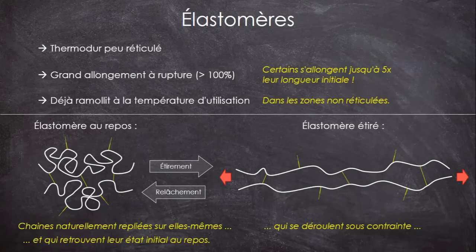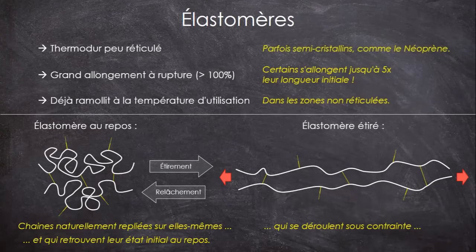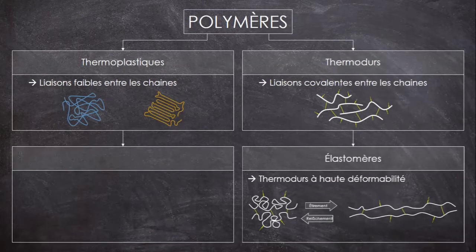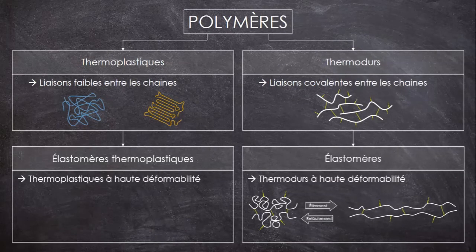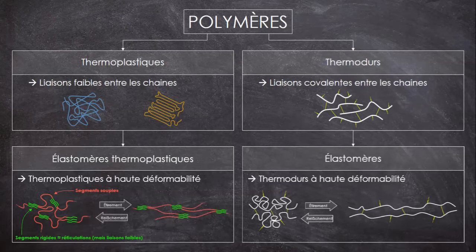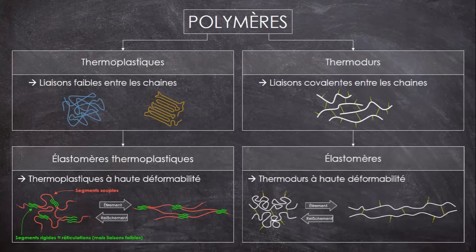Le faible taux de réticulation qui permet le déroulement des chaînes permet aussi d'avoir quelques élastomères semi-cristallins, bien qu'ils soient techniquement des thermodurs. Et depuis plusieurs années, sont développés des élastomères thermoplastiques, puisque élastomère seul sous-entend réticulé, donc thermodur. Ces élastomères thermoplastiques sont analogues aux élastomères, sauf qu'ils ne sont pas réticulés, mais ils présentent des segments rigides entre les segments souples qui se lient par des liaisons faibles. Ils sont plus simples à mettre en forme et théoriquement recyclables, mais plus chers à performance équivalente.